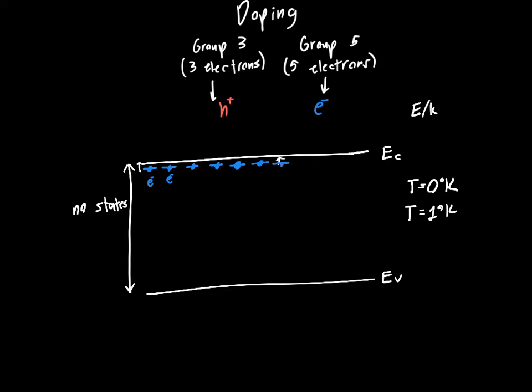As you raise the temperature higher, and by the time you get to room temperature, T equals 300 degrees Kelvin, then most of these electrons have jumped into the conduction band because they have enough thermal energy from random movement to jump up. And so these electrons are now available to conduct electricity.